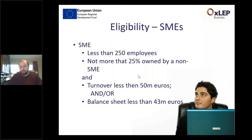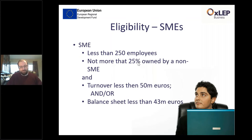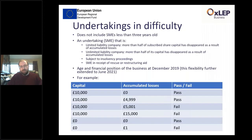In addition to employee numbers and ownership, you need a turnover of less than 50 million euros and a balance sheet of less than 43 million euros, both based on your last published accounts. For most people this is not an issue.